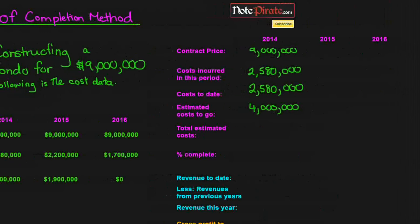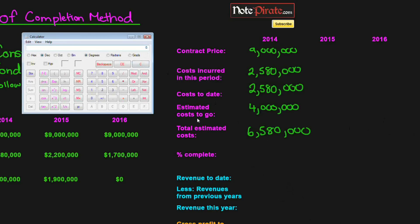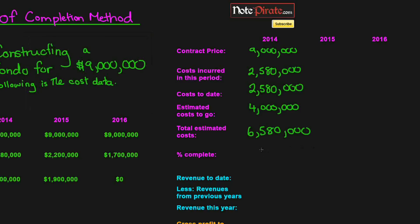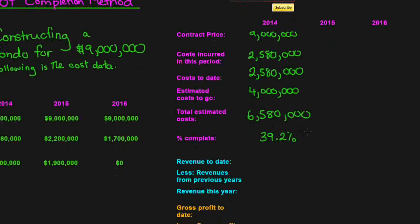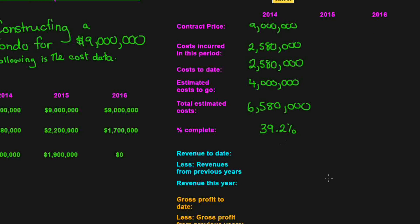Total estimated costs are six million five hundred and eighty thousand dollars. With the percentage of completion method, we figure out how much revenue to recognize based on how much of the project is complete. We determine the percentage complete by dividing cost to date by total estimated cost — so two million five hundred and eighty thousand divided by six million five hundred and eighty thousand — which gives us thirty-nine point two percent of the job finished.